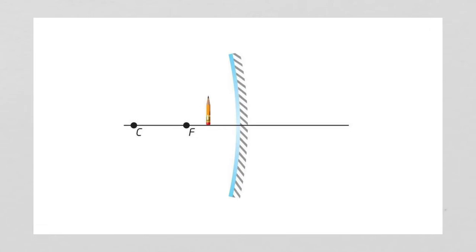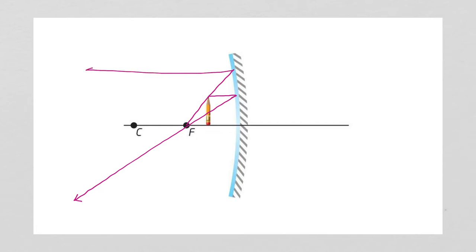In this example, the object is in front of the focal point, so there'll be a difference in where our image appears. We draw the horizontal ray in, then the reflected ray. The second ray is a bit trickier — you draw the angle until it hits the mirror, then reflect it back. The two reflected rays are never going to meet, so you have to extend the reflected rays behind the mirror and find out where they cross. Our image is going to appear there.